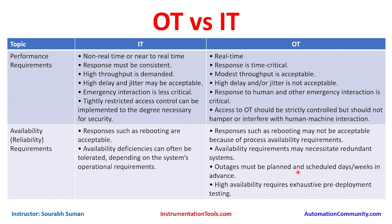Availability requirements may necessitate redundant systems in OT. To maintain availability, we create redundant systems so that if one system is lost, we can switch to another. Outages must be planned and scheduled days or weeks in advance. We need to plan when we can do a planned shutdown of servers, workstations, and other control systems — finding a maintenance window during a process shutdown to reboot or service the control system.